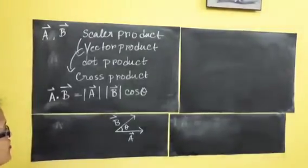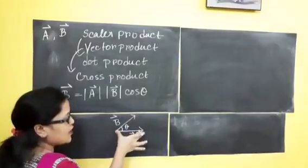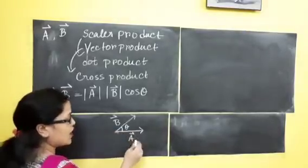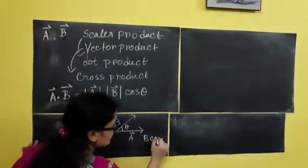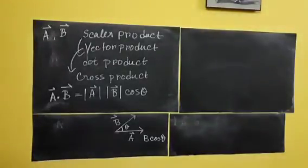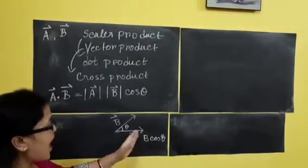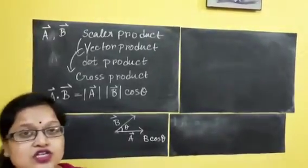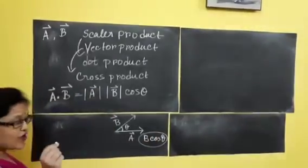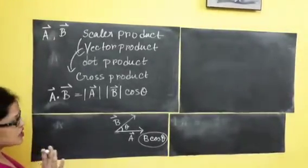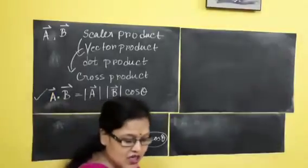If this is vector B, then what is the component of B acting along A? We know that if this is my B vector, the component of B along A is B cos theta. We had done this the previous day — this is called B cos theta. So if I do the multiplication, I am taking the magnitude of A and the magnitude of B along the direction of A, which will be the component of B — that is B cos theta. So the formula you should remember is: A dot B equals magnitude of A times magnitude of B times cos theta. This is called the scalar product.